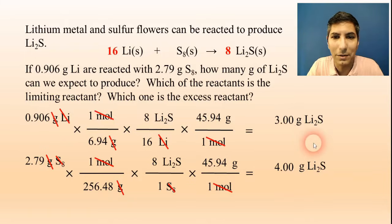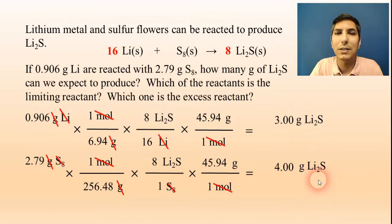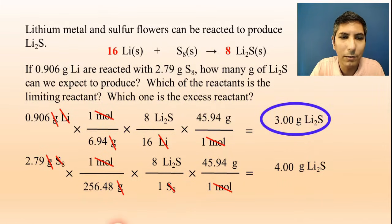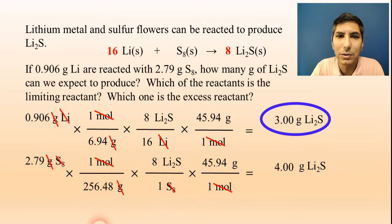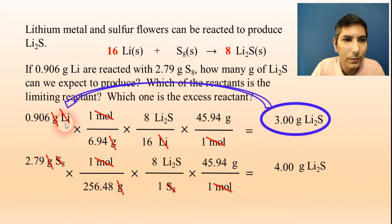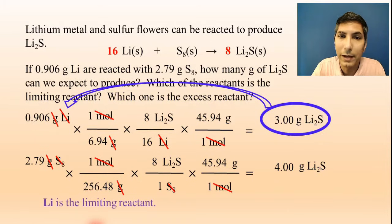Now we have two answers. Which one is correct? It's the smaller one — so the answer is 3.00 grams of lithium sulfide. Which reactant is the limiting reactant? It's the reactant that produces the smaller amount. Since lithium produced the smaller amount, lithium is going to run out first — that's the limiting reactant.